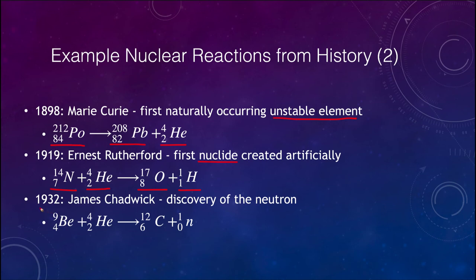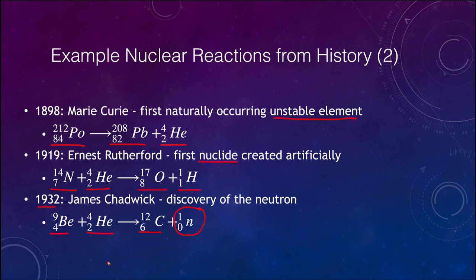In 1932, the neutron was discovered by bombarding beryllium with helium, which left carbon. If we ignore the neutron, we find the charges are balanced with 6 on each side, but we have 13 mass units on the left and only 12 on the right with carbon. So we need that one extra mass unit to keep mass balanced and obey the conservation of mass.